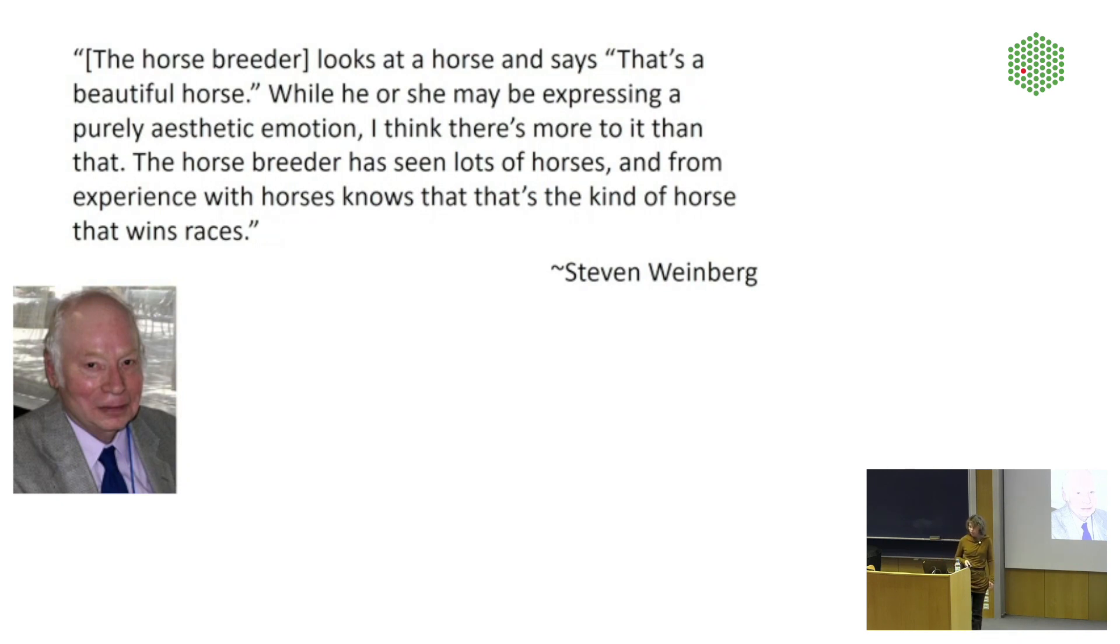Then we have Steven Weinberg. Steven Weinberg is also a Nobel Prize winner. He won the Nobel Prize for the development of the Standard Model. He wrote a book in the 1990s called Dreams of a Final Theory. And in this book he makes this comparison to a horse breeder. The horse breeder looks at a horse and says, that's a beautiful horse. While he or she may be expressing a purely aesthetic emotion, I think there's more to it than that. The horse breeder has seen lots of horses and from experience with horses knows that that's the kind of horse that wins races. So what he's trying to say here is that beauty is experience. We learn to recognize successful theories as scientists the same way that the horse breeder learns to recognize successful horses. And that's what we come to mean by beauty.